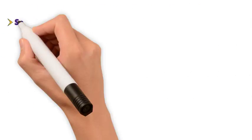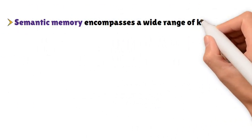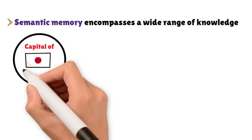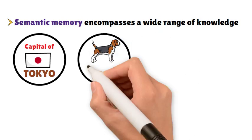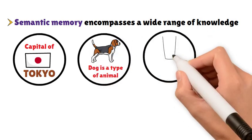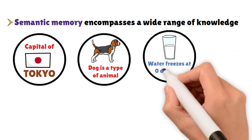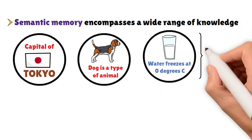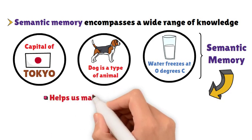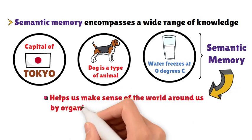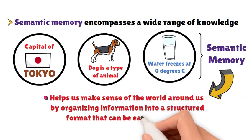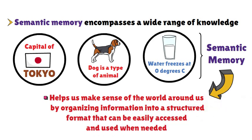Semantic memory encompasses a wide range of knowledge. For example, knowing that the capital of Japan is Tokyo, understanding that a dog is a type of animal, or recognizing that water freezes at zero degrees Celsius are all examples of semantic memory. This type of memory helps us make sense of the world around us by organizing information into a structured format that can be easily accessed and used when needed.